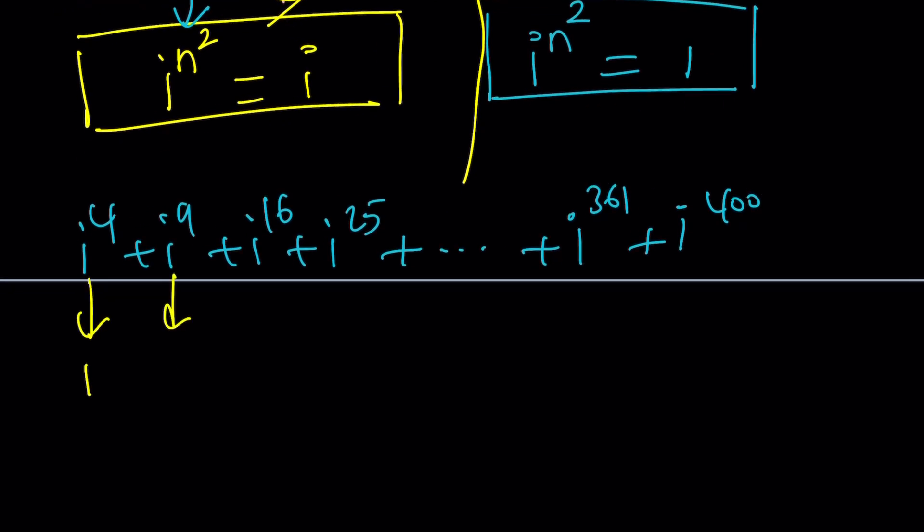This is i. This is 1. This is i. That kind of explains why it goes like this. So we know we have a pattern. And notice that with the odd powers, it's going to be i and otherwise it's going to be 1.